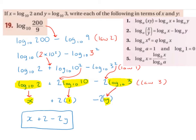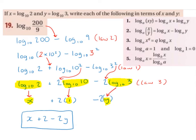So now I have log base 10 of 2, plus log base 10 of 10 squared, minus log base 10 of 3 squared. I'm going to bring the powers down in front of the logs using Law 3. So log base 10 of 10 squared becomes 2 log base 10 of 10, and minus log base 10 of 3 squared becomes minus 2 log base 10 of 3. Law 1 made the multiply a plus, and Law 3 brought the powers down.